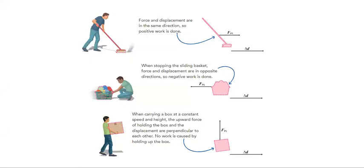Here are some examples of how applying the force in the same direction as the displacement means work is positive. In the other situation, when you stop a sliding basket, for example, force is applied in the opposite direction of the displacement, so the work that is done is negative. And in the last case, when you carry a box at constant speed and height, the upward force of holding the box and the displacement are perpendicular to each other. No work is caused by holding up the box.